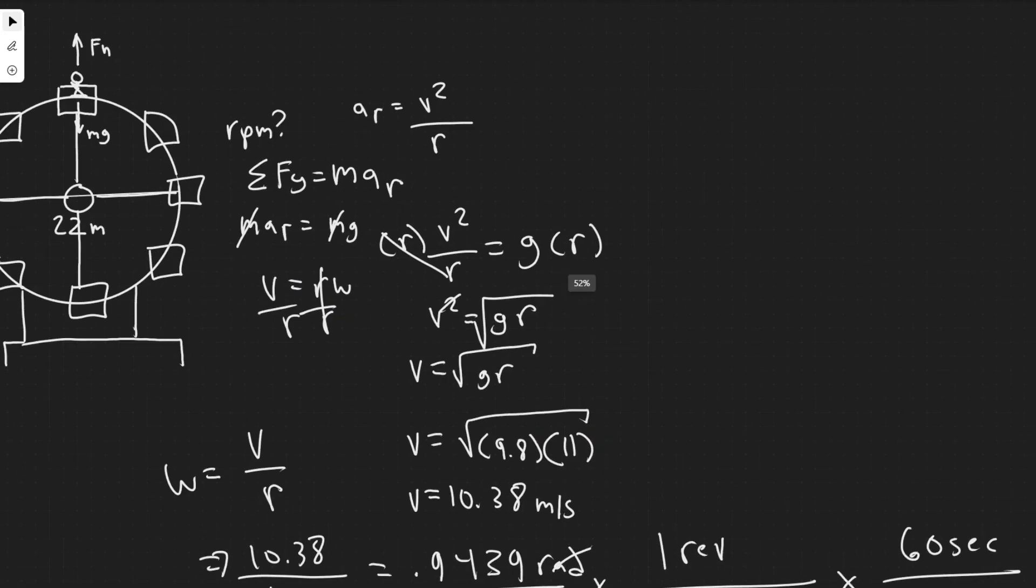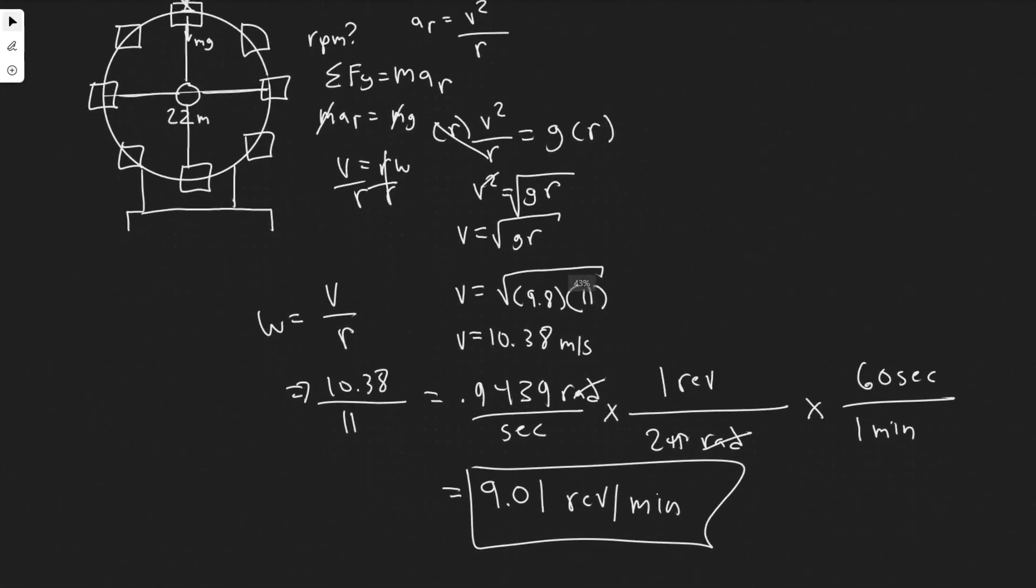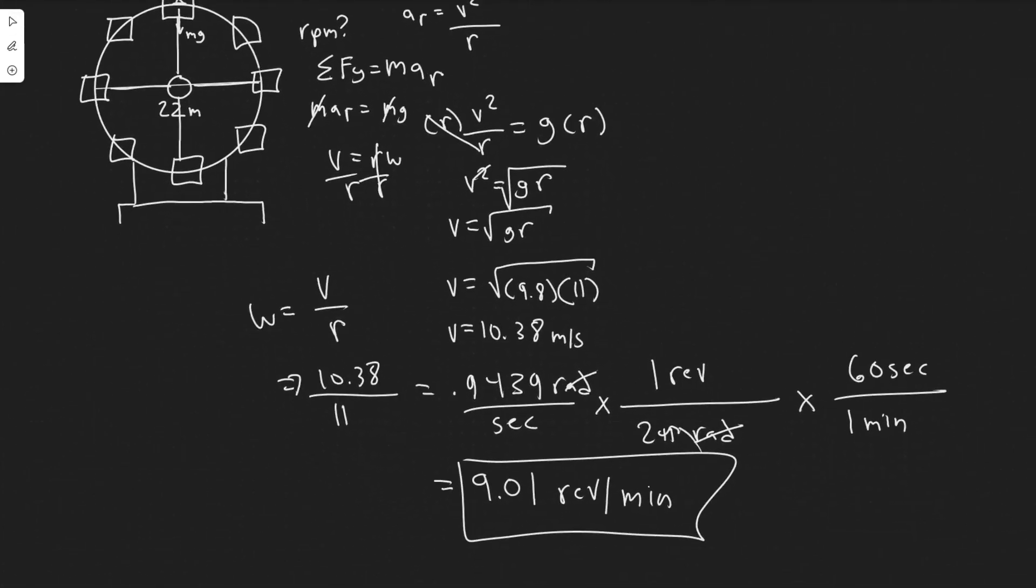So just summarizing how we solved this. Basically, whenever you do a problem like this, dealing with something in a circle, you're going to be using centripetal acceleration, summing the forces, and then we used it to sub in the velocity. Then we use the velocity to solve for omega or the angular velocity, and then just converted the units.